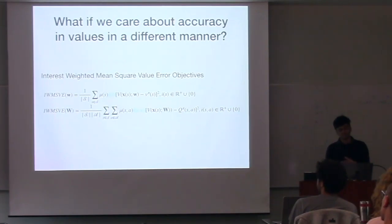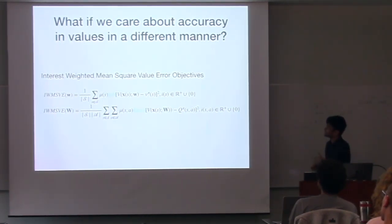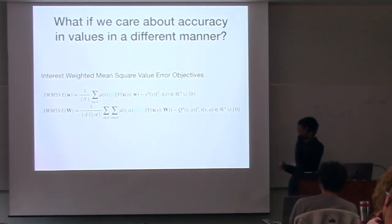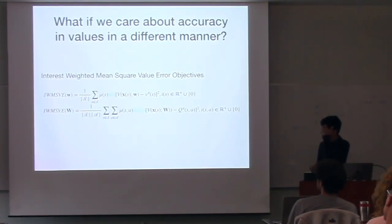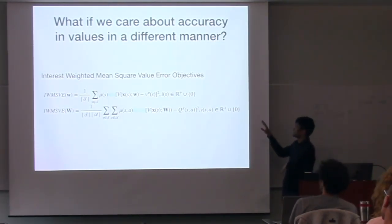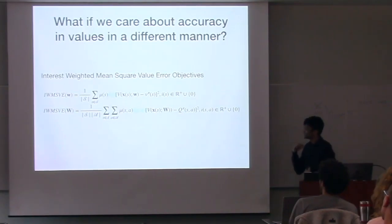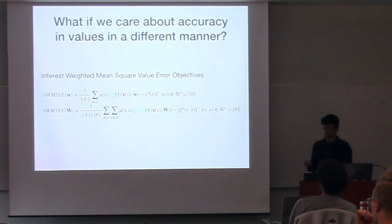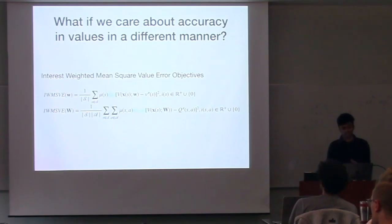Essentially what you have in these interest-weighted objectives is you add this i(s) or i(s,a), which is essentially a positive scalar that's either zero or positive, which changes your objective - how you weight each state or state-action pair.